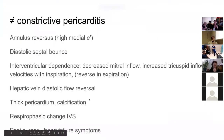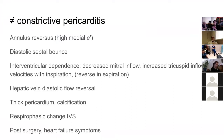Other features to look for include a thick pericardium — easier to see on CT with calcification than on echo — respirophasic changes in the interventricular septum, and clinical history. Most constrictive pericarditis seen these days is post-surgical. Both restrictive cardiomyopathy and constrictive pericarditis present with heart failure symptoms.